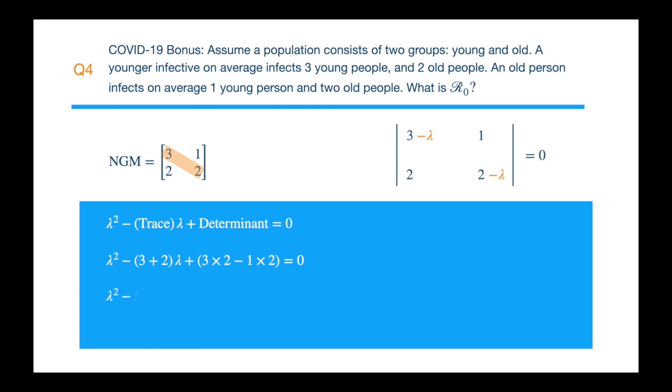3 plus 2 is 5, and 6 minus 2 is 4. Now we need to find two numbers which sum is minus 5 and which product is 4. So these must be minus 4 and minus 1.